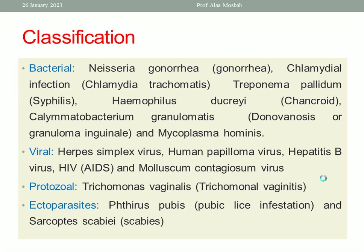What about the protozoal group? Trichomonas vaginalis causing trichomoniasis. And the last group is ectoparasites. So these are the four main groups: bacterial, viral, protozoal, and ectoparasites.